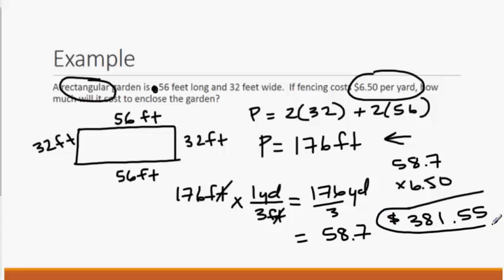So be sure you read your questions carefully. Not only did we need to find the perimeter, we needed to convert our perimeter, which was in feet, to yards. And we did this using dimensional analysis. And then we had to find out how much it would cost to have 58.7 yards of fencing.